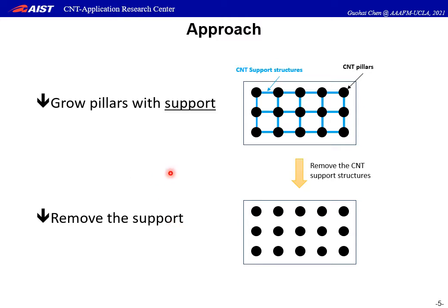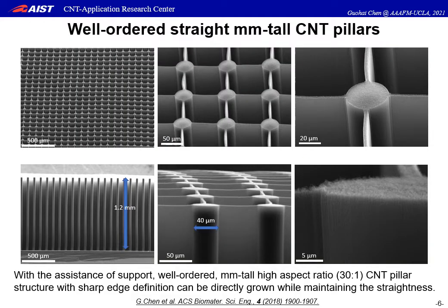To overcome this systematic limitation, here is our approach. Our concept is very straightforward — just like building a tall architecture, you need a support structure to make it stand straight. We first grow CNT pillars with the help of a support so the pillars can keep straight. Then we remove the support to get freestanding straight CNT pillars. Using patterned catalyst by laser graphitization, CNT pillars were grown by chemical vapor deposition. With the help of the support, we can grow highly straight, highly vertically well-ordered CNT pillar arrays, about 1.2 mm tall with 40 microns in diameter.